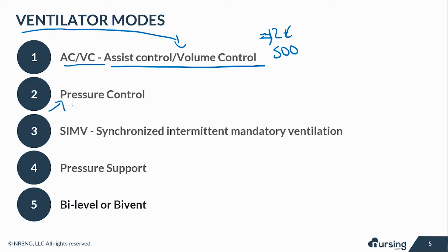The second mode is pressure control. This delivers a predetermined pressure to help inflate the lungs. It may not always guarantee a specific tidal volume because the focus is on the pressure needed to ensure the lungs get inflated. A good example is a patient with ARDS — you don't want to over-inflate the lungs since they're already constricted, so you're more concerned about controlling pressure to prevent damage. That is where pressure control is used.